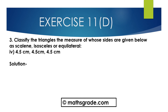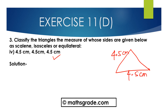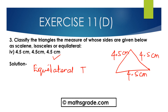Part d: 4.5cm, 4.5cm, and 4.5cm. In this triangle, all three sides are equal, each equal to 4.5cm. We know any triangle whose all three sides are equal is called an Equilateral triangle. All three sides are equal, so this is an Equilateral triangle.